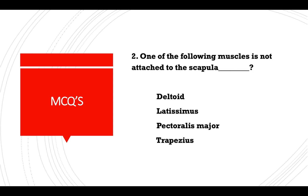MCQ: One of the following muscles is not attached to the scapula — deltoid, latissimus dorsi, pectoralis major, or trapezius? Answer: Pectoralis major.